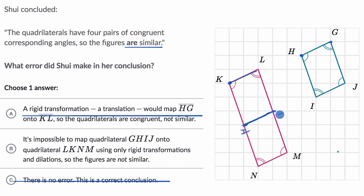And then if you tried to dilate it so that the length of HI and GJ matched KN or LM, then you're going to make HG bigger as well. So you're never going to be able to map them onto each other, even if you can use dilations. So I like choice B.